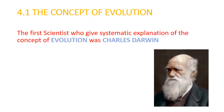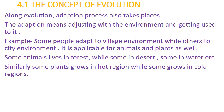The first scientist who gave a systematic explanation of the concept of evolution was Charles Darwin. Along with evolution, the adaptation process also takes place. Adaptation means adjusting with the environment and getting used to it.